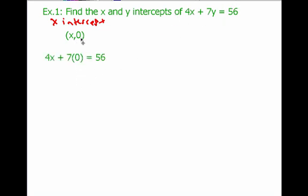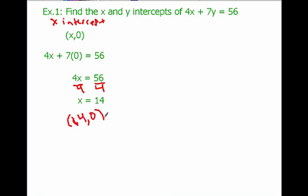The x stays x, but our y we now know is zero. So we know 4x plus 7 times zero equals 56. So if we solve this out, 7 times zero, that's just zero. So I get 4x equals 56. Divide both sides by 4. And I get x equals 14. So if we know that x equals 14, then our x-intercept is at the point 14, zero. All we did is we plugged in zero for y and solved for x.